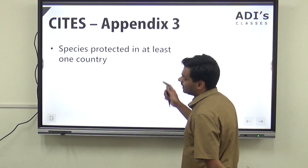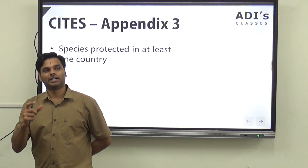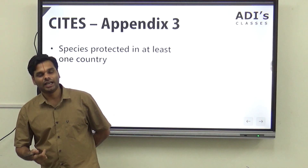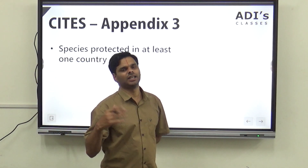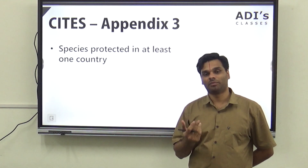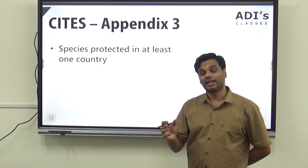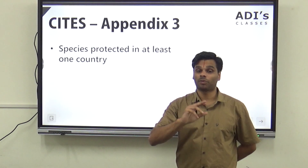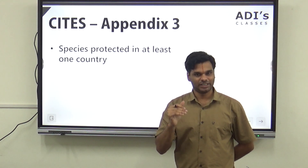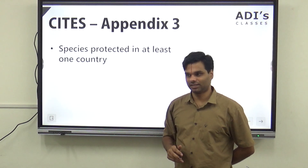Appendix three has all the species that are protected in at least one country. For example, in India you may have one species that is there in abundance, but that species may not be abundant in some other country — that country may place it in their protected list. So even those species are protected under CITES, but they are placed in Appendix three.